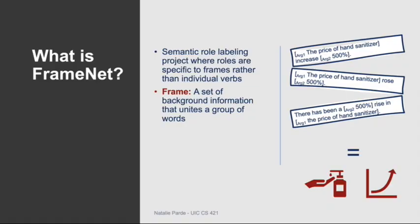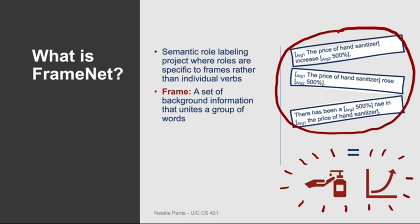Being able to identify commonalities among events is useful for natural language understanding, but what would be even more useful would be to make more general inferences that abstract across different but similar verbs, or even across other syntactic structures that convey similar meanings, as shown in the example on the right here.